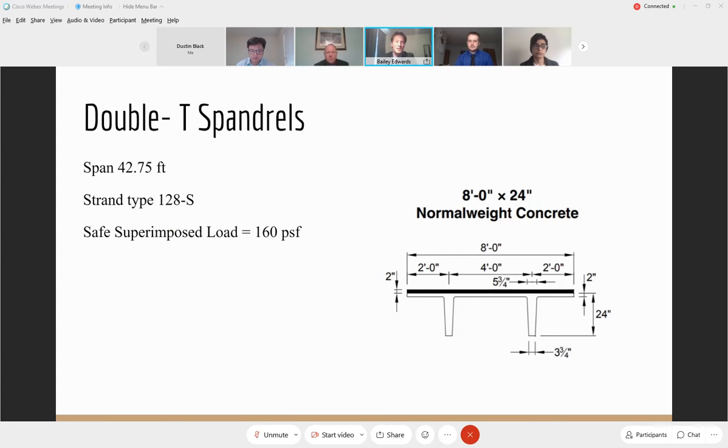The double T spandrels were one of the simpler things that we had to design of the components, because the PCI design manual gives us a table that has different span lengths, different types of double Ts, different strand types, as well as the safe superimposed load that can act on them. So what we chose was an eight foot wide by 24 inch deep double T spandrel. It spans approximately 43 feet. With strand type 128-S, it can take a safe superimposed load of 160 pounds per square foot, which is higher than the required loadings that we had acting on our parking deck. Also, you can notice in the picture down there, there's a two inch black topping, which is going to be a cast in place concrete topping that's going to allow for a smooth finish. And then that was also calculated into the dead load of the structure.